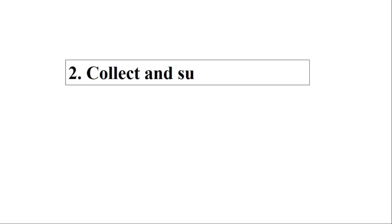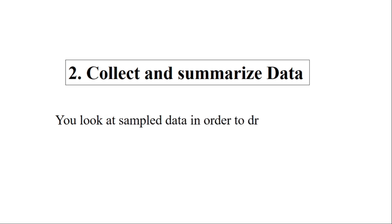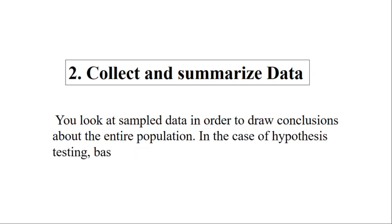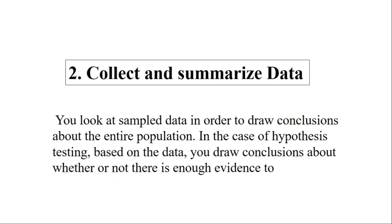Step two is to collect and summarize data in order to test the hypothesis you proposed in step one. You look at the sampled data to draw conclusions about the entire population. Based on the data, you determine whether or not there is enough evidence to reject H0. If H0 is rejected, your alternative hypothesis is accepted; if you fail to reject H0, your alternative hypothesis will be rejected.